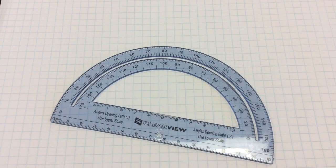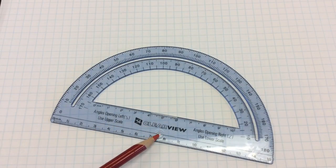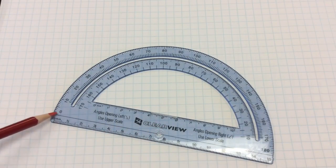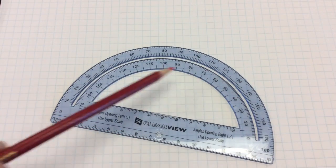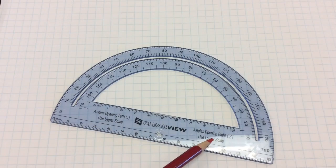Different protractors have different locations for their vertices. This one's right there in the middle, center of that hole. Line up that line running across. Angles are numbered clockwise and counterclockwise, 0 to 180 degrees.